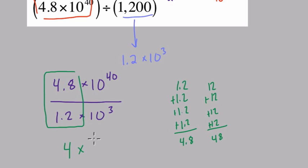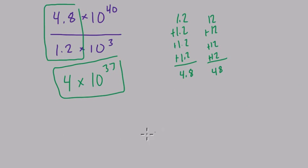Then when we divide our powers of 10, we subtract our exponents, and we get our final answer: 4 times 10 to the 37th. Now in E notation, that would be 4E37. Again, E means times 10, and the number after E is the exponent. All right, thanks.